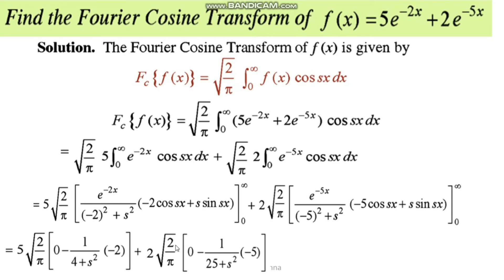For the second integral's limit evaluation: when x approaches infinity, e^(-infinity) is 0, so that term vanishes. When x is replaced with 0, we get 1/(25 + s²) multiplied by [(-5)·cosine(0) + s·sine(0)], where cosine(0) = 1 and sine(0) = 0, leaving -5/(25 + s²).